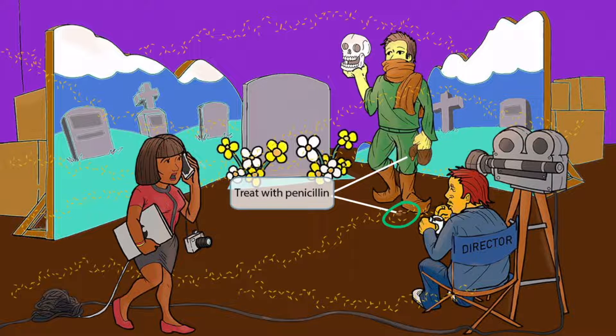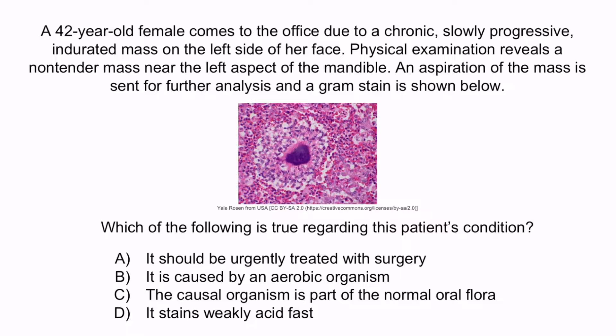Now that we've covered the image, let's review with a question. A 42-year-old female comes to the office due to a chronic, slowly progressive, indurated mass on the left side of her face. Physical examination reveals a non-tender mass near the left aspect of the mandible. An aspiration of the mass is sent for further analysis, and a gram stain is shown. Which of the following is true regarding this patient's condition? A: it should be urgently treated with surgery. B: it is caused by an aerobic organism. C: the causal organism is part of the normal oral flora. Or D: it stains weakly acid fast.